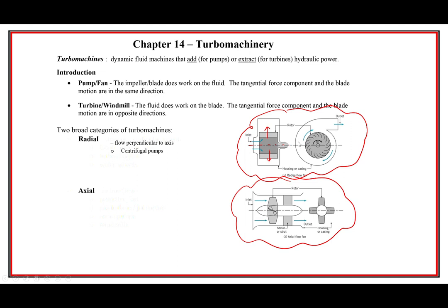The radial direction is typical for centrifugal pumps, turbochargers, water wheels, and some fans. For axial flow, the flow is in line with the axis. This is typical of propellers, most fans, propellers on ships, gas turbines, and jet engines - they are axial. There are also some axial pumps.